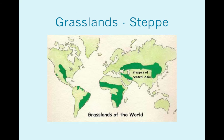Three types of grasslands you need to know. The best way to tell them apart is by the height of the grass. Steppes are maybe ankle or mid-calf high grass. Prairie grass maybe gets as tall as your waist. And then the savannah — you get the really lush stuff. Elephant grass can grow over your head.